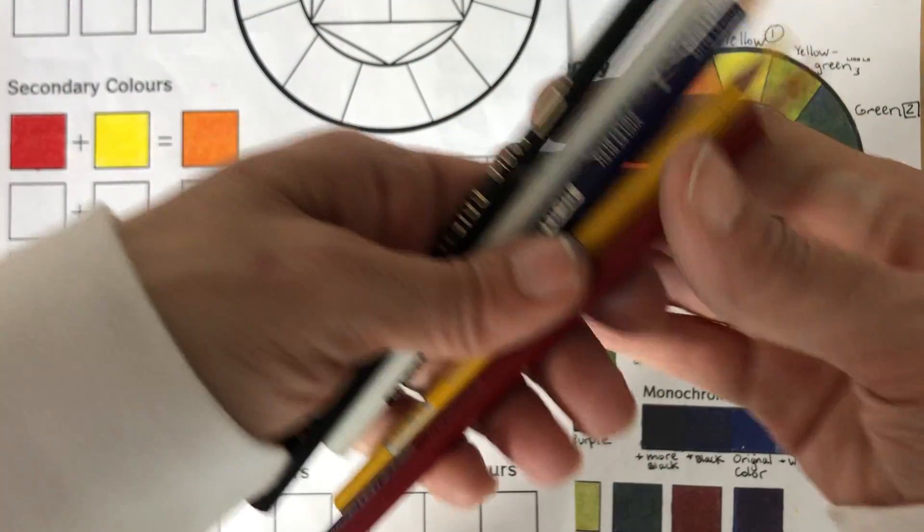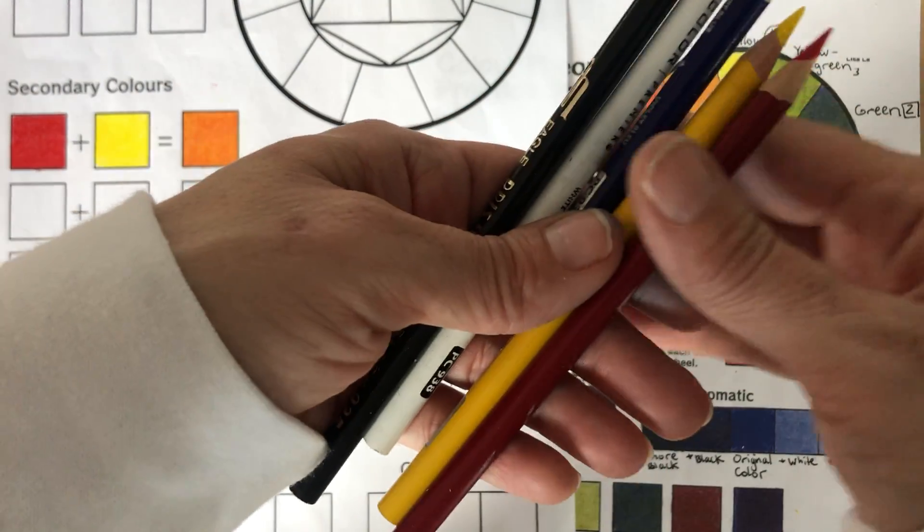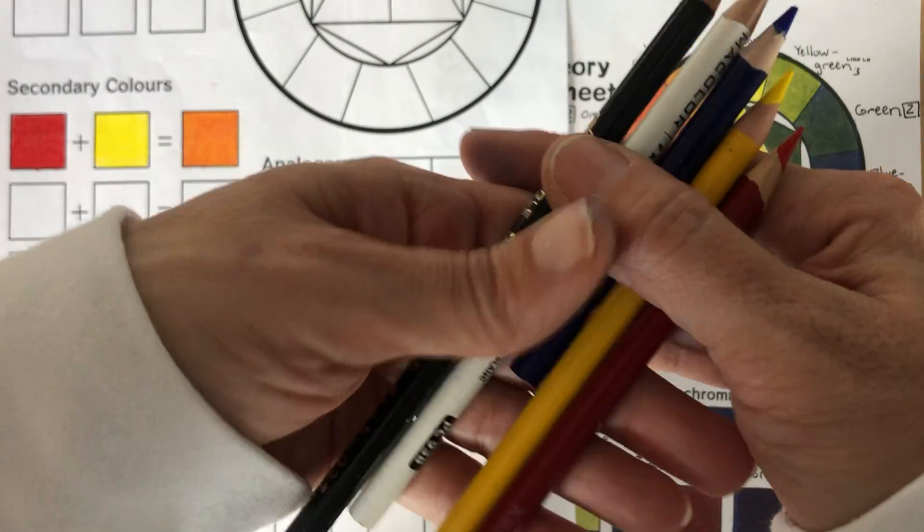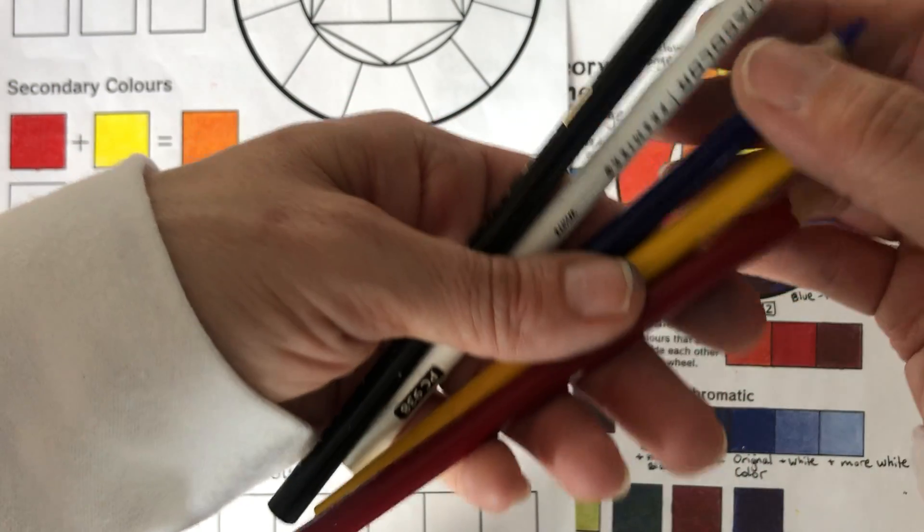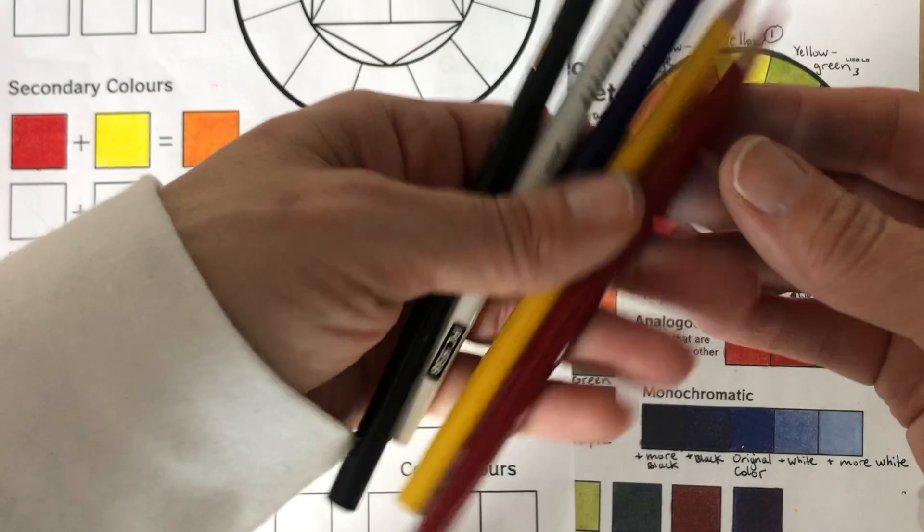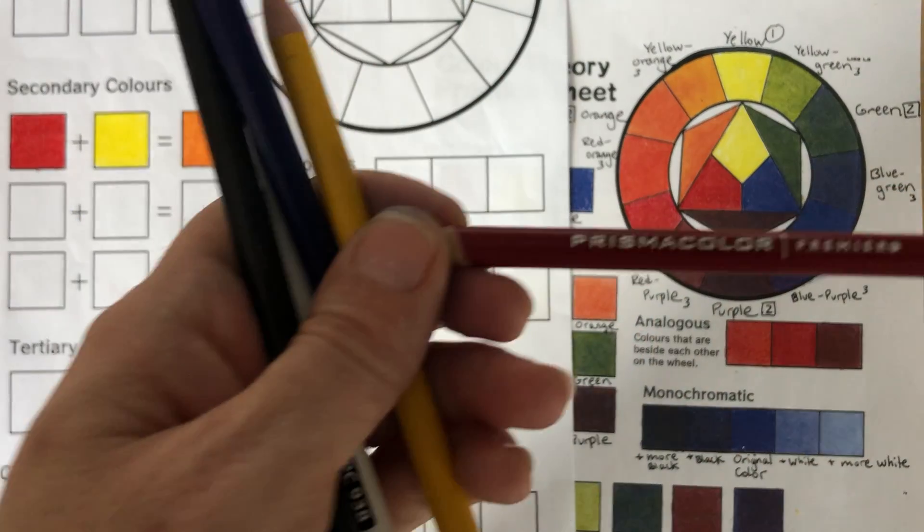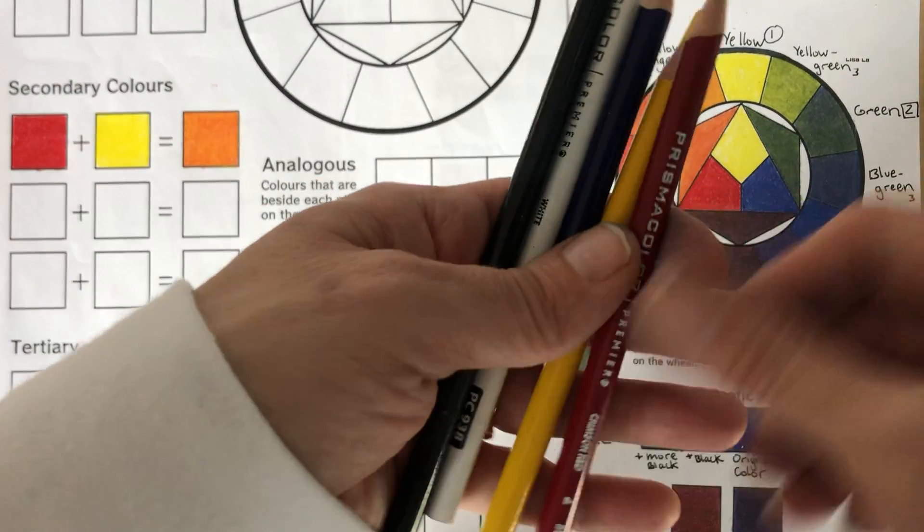And you're going to need five colors. That's it. Do not be tempted to grab those secondary colors. So you're going to need a red, a yellow, a blue, and a white, and a black. And make sure you're working with those Prismacolor colored pencils. That's very important.